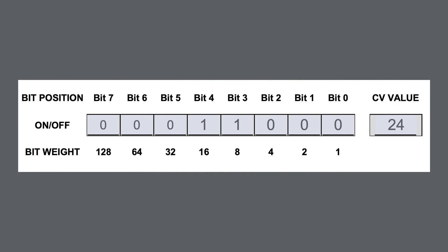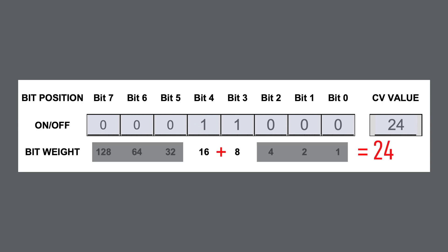What this does is give these eight bits the unique ability to create any number with an addition of these values from 0 to 255. So 0 would be all the bits in the off condition and 255 would be all the bits in the on condition. For example, if we're trying to create a bit value, the value of 24 is constructed with the addition of bit number 3 worth a value of 8, and bit number 4 worth a value of 16. So the value of 24 is your CV value.